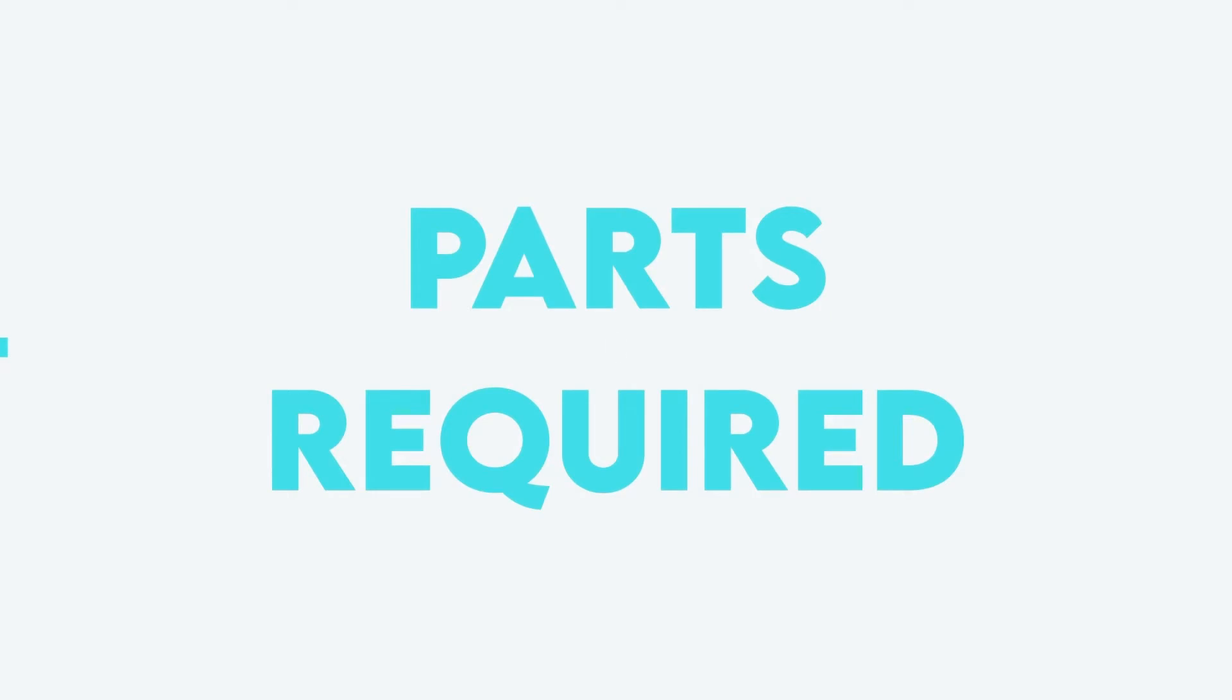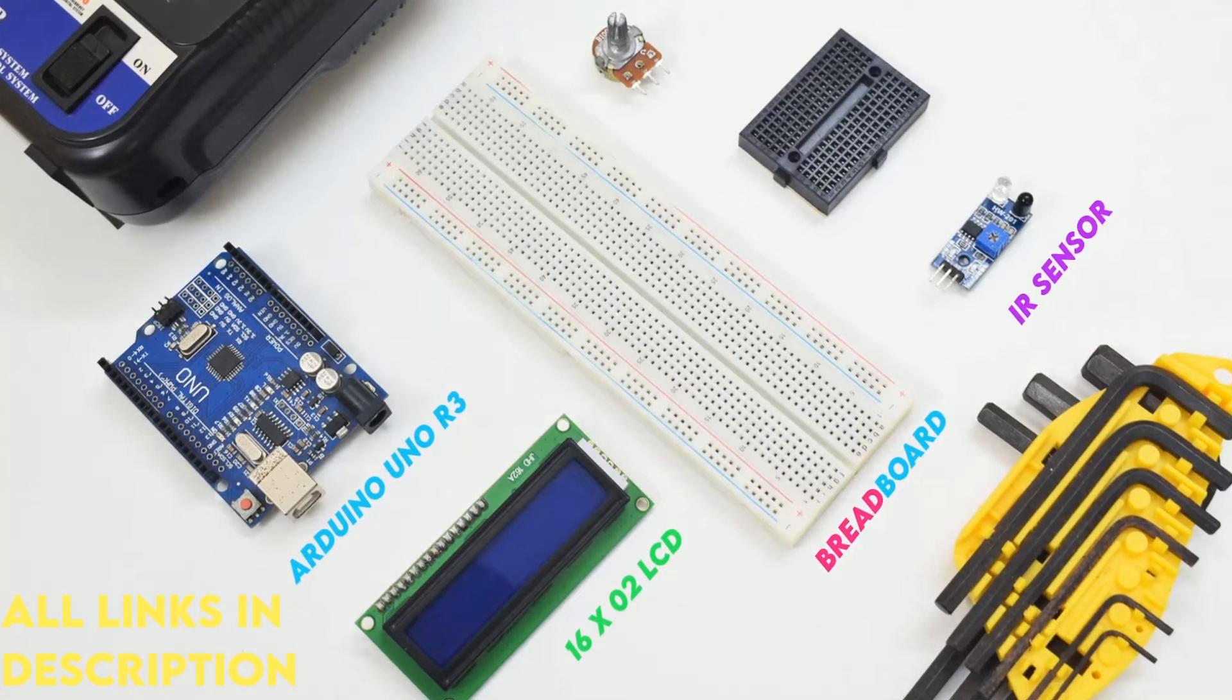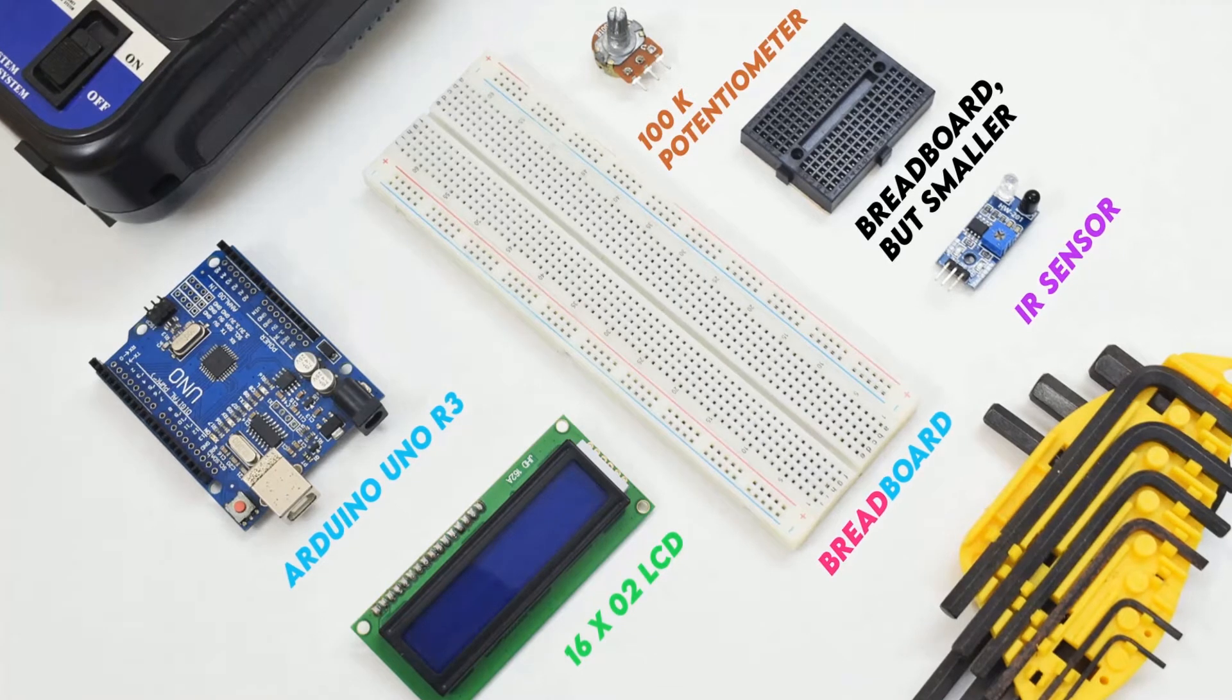Now let's go over the major components required: a 16 by 2 LCD, an Arduino Uno, a full-size breadboard, an IR sensor, a mini breadboard, and a 100k potentiometer. Even a 1 or 10k potentiometer will work just fine.